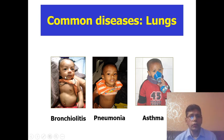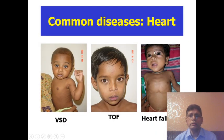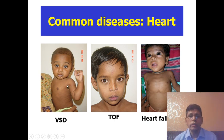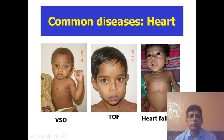First you must know bronchiolitis and pneumonia for the lungs. Common diseases of the heart: the number one is ventricular septal defect — the most common congenital heart disease. Also important for exams is Tetralogy of Fallot, coming with blue lips, clubbing, and respiratory distress. Another one is heart failure — you must learn VSD and Tetralogy of Fallot.